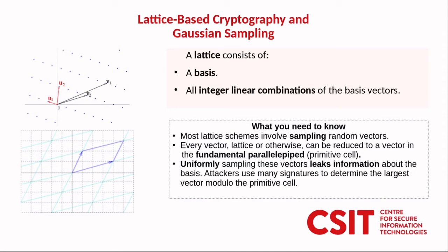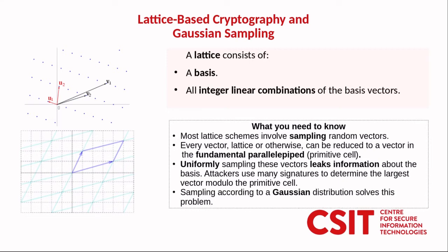Uniformly sampling these vectors can leak information about the basis because if we sample enough vectors in the lattice such that we then reduce them to the fundamental parallelpiped we eventually fill in the parallelpiped itself and that can be used to infer the basis vectors which form the fundamental parallelpiped. So Gaussian sampling is one way in which this problem is mitigated.